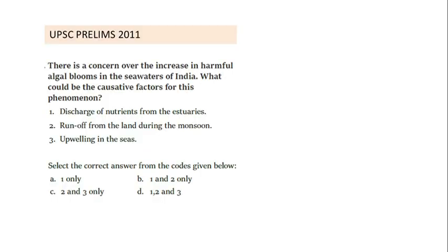Let us look at some questions asked in UPSC prelims. The first question is: there is concern over an increase in harmful algal bloom in the seawater of India — what could be the factors for this phenomenon? First, discharge of nutrients from estuaries. Second, runoff from the land during monsoon. Third, upwelling in the seas. This question can be easily correlated with algal bloom.